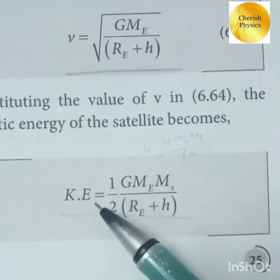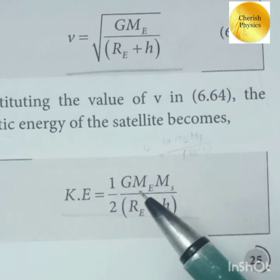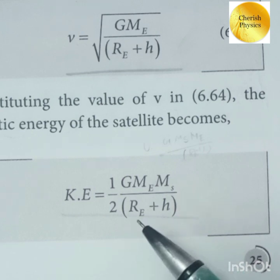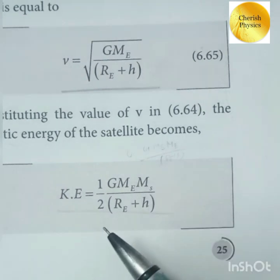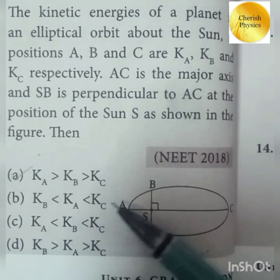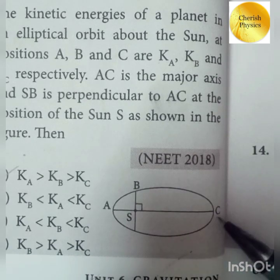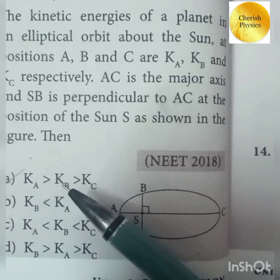We know the formula for kinetic energy of an orbiting satellite: KE = (1/2) × G × M_earth × m_satellite / (R_earth + h). It is clear that kinetic energy is inversely proportional to orbital distance. So, Ka is much greater than Kb and Kc. The answer is option A: Ka > Kb > Kc.